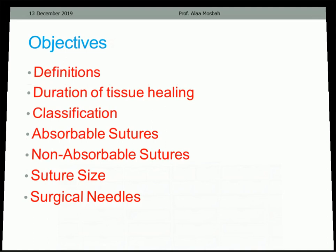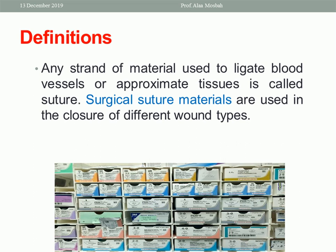Any strand of material used to ligate blood vessels or approximate tissues is called a suture. Surgical suture materials are used in the closure of different wound types. Here are some examples of suture material of different varieties.